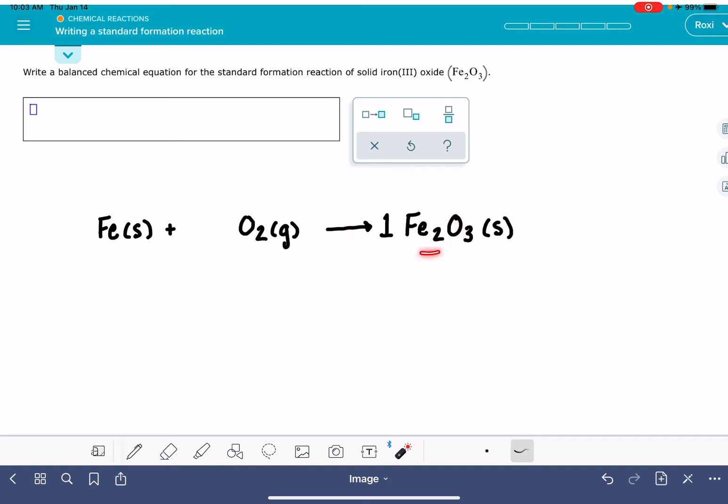For the iron, it's not that tricky. We know that we need 2 total iron atoms, so we're just going to put a stoichiometric coefficient of 2 right here.